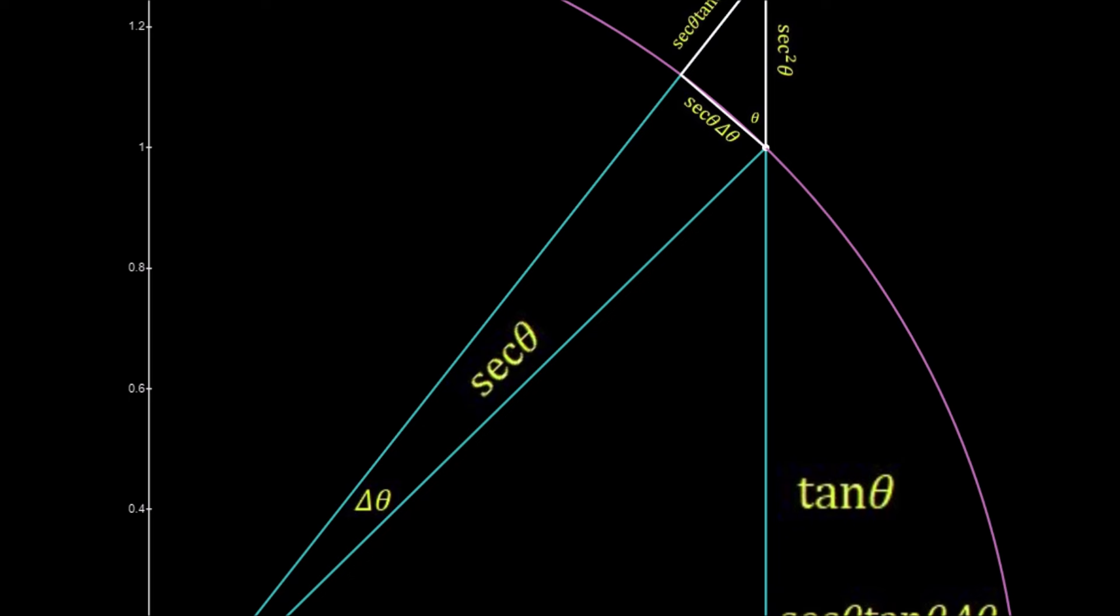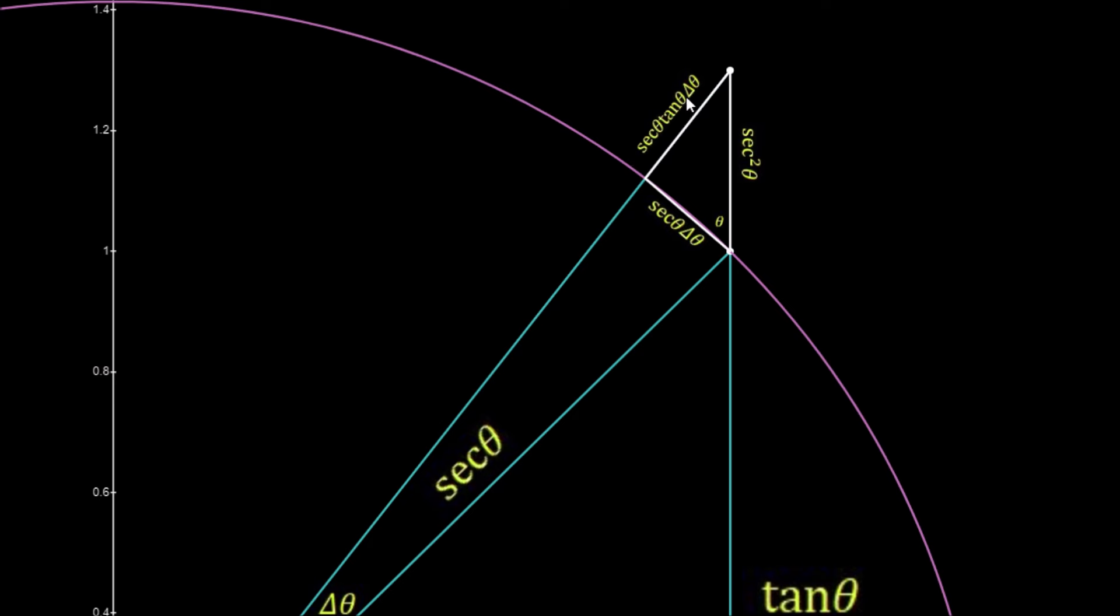And this little length here, by our similar triangles, is given by sec theta tan theta. So whenever we differentiate sec theta, we get this length here, sec theta tan theta.